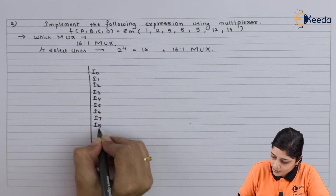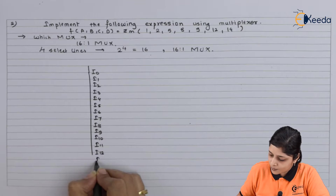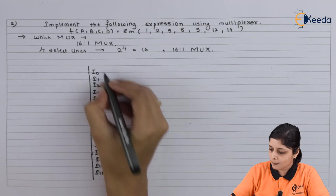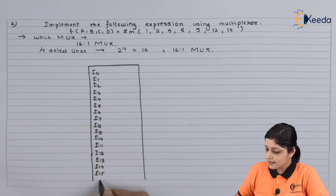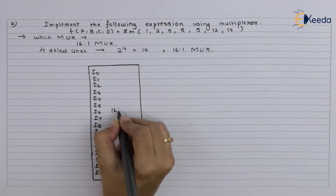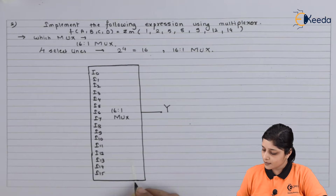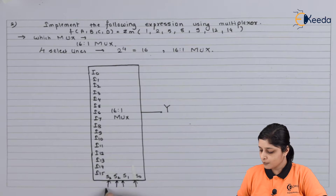Continue with inputs I7, I8, I9, I10, I11, I12, I13, I14, and I15. This completes the 16-to-1 MUX. Y is the output. For select lines, we draw S0, S1, S2, and S3, and the inputs are A, B, C, and D.